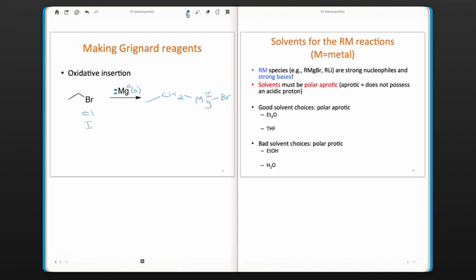Now what that does - we've gone from having a CH2 carbon next to the leaving group that was delta positive. We've changed its reactivity so that now it's delta negative, with the magnesium, the metal, being delta positive. So now this carbon is nucleophilic.